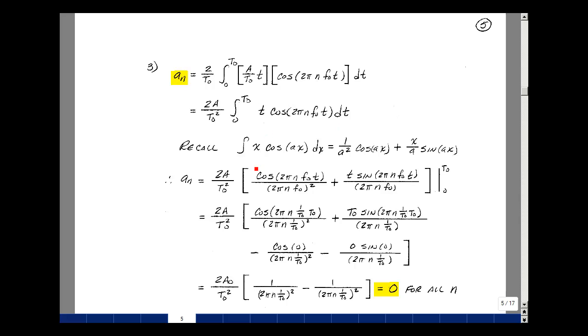If you recall from calculus, the integral of x cosine of ax dx is 1 over a squared, cosine of ax, plus x over a sine of ax. In our case, x is equal to t, and a is equal to 2 pi n f0.